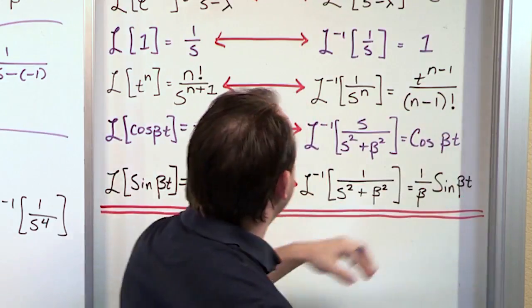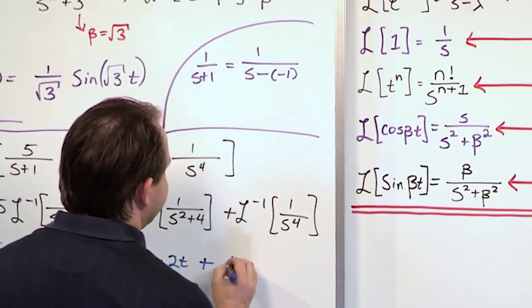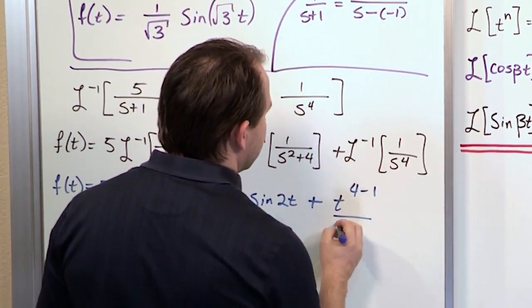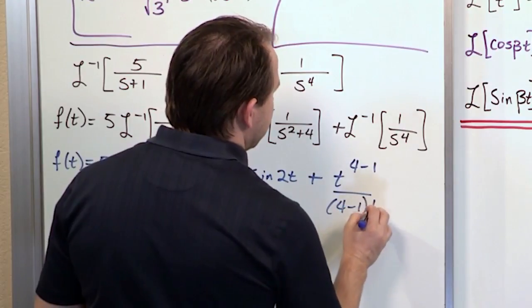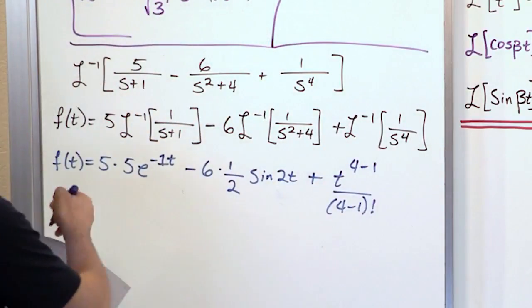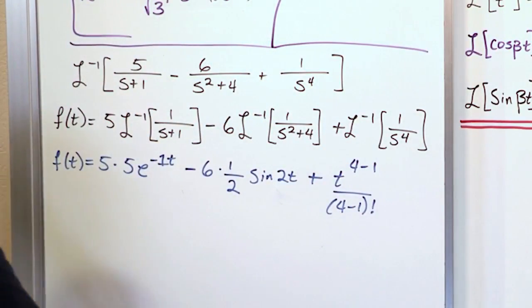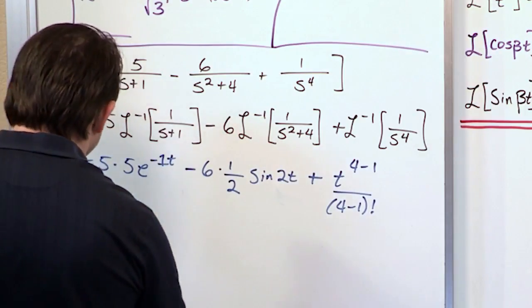4 minus 1 factorial. So what we have is t to the 4 minus 1. 4 minus 1 factorial. So we're just plugging in at every step of the way, just making sure that we're doing a correct substitution.